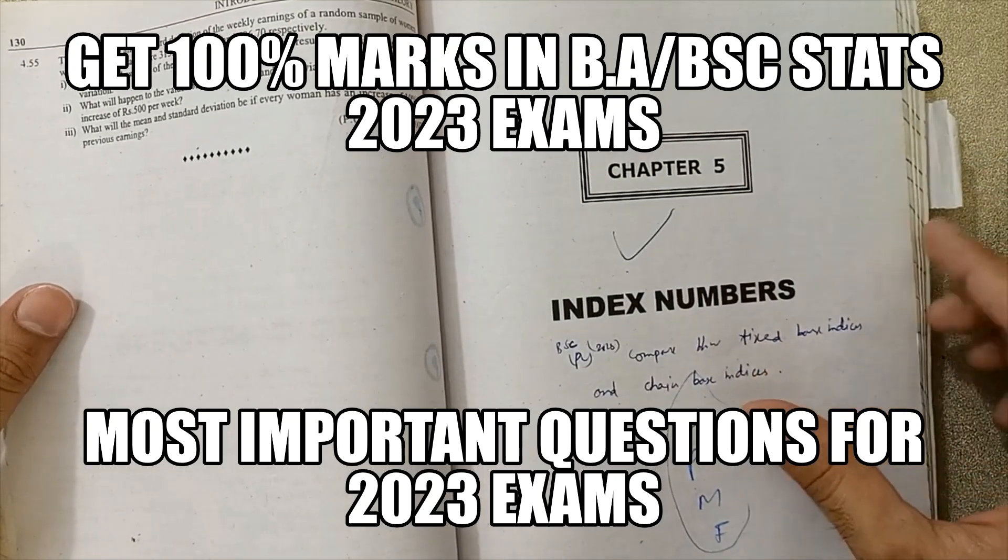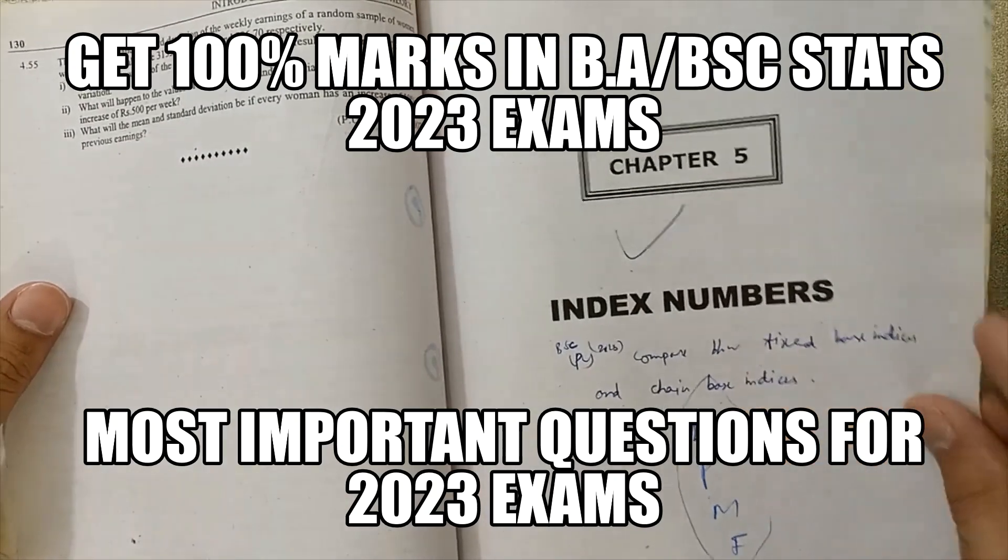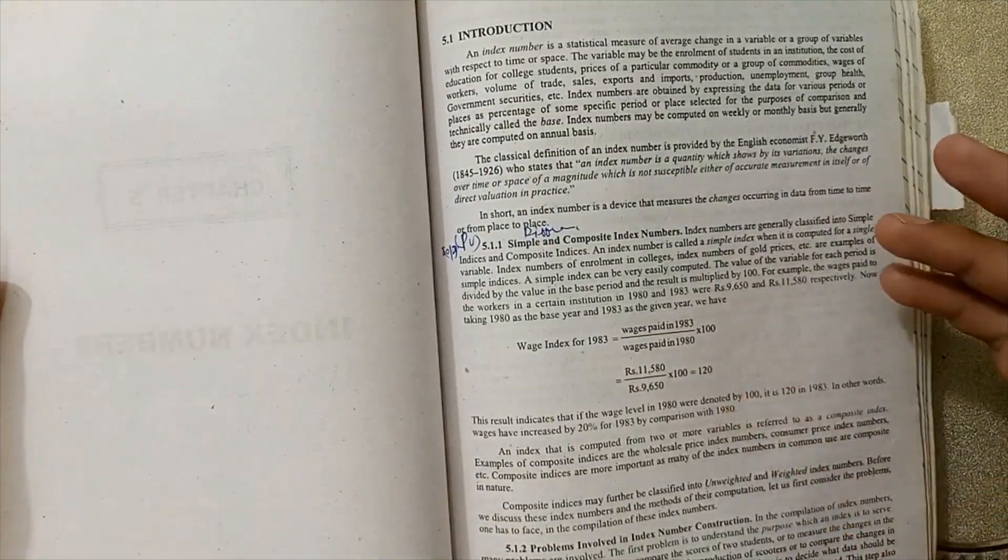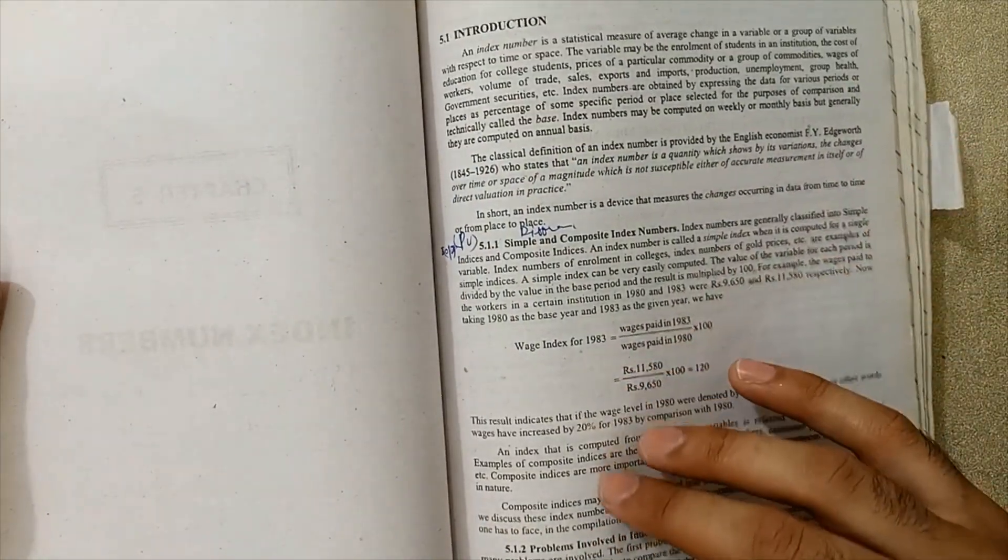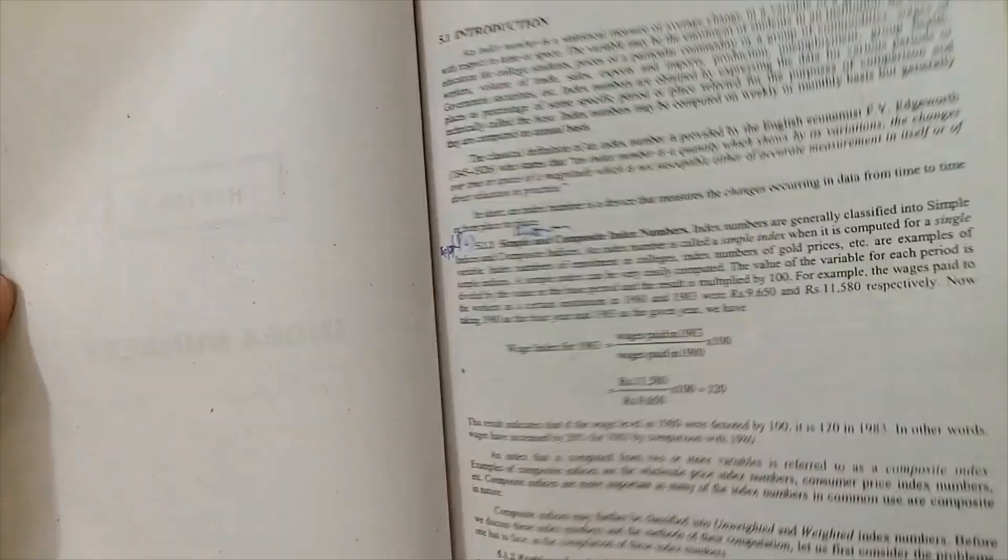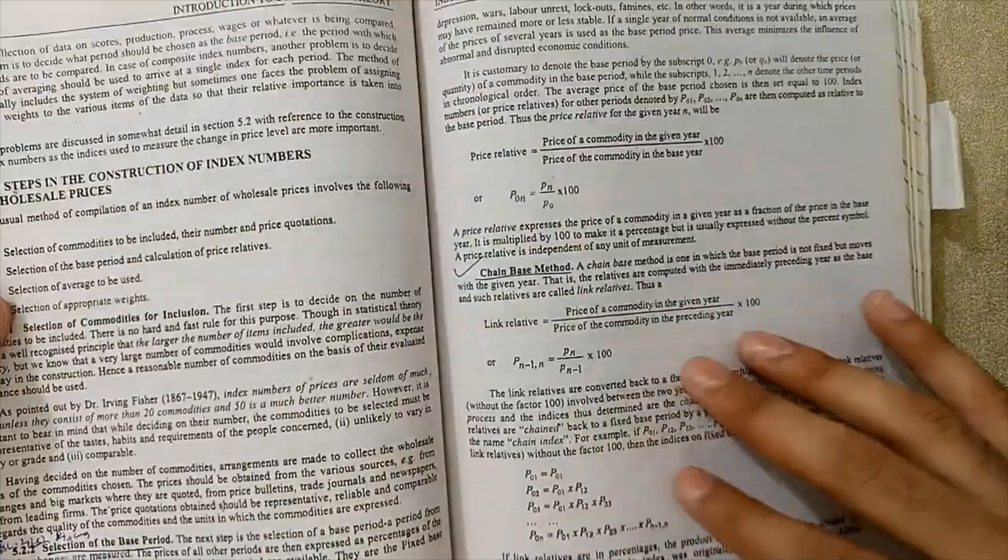I'm going to move to Chapter 5: Index Numbers. What are the index numbers? You must remember what are the index numbers, what is the simple difference between simple and composite index numbers. These definitions are very, very important.